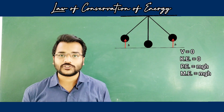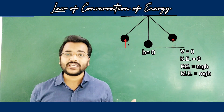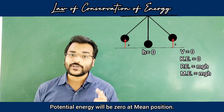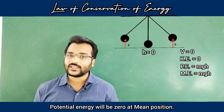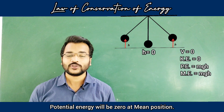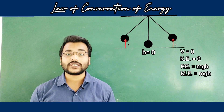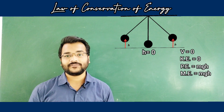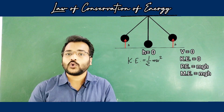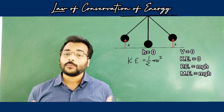Now let's move on to the mean position. At the mean position there is no height from the ground — ball aur ground ke beech mein koi bhi height nahi hai. If there is no height, then potential energy will be equal to zero, since the formula is mgh. So at the mean position, potential energy is zero. Now, kinetic energy will be equal to half mv², but we do not have the value for velocity. So we will convert velocity into a form that we already have, without introducing any extra variables.